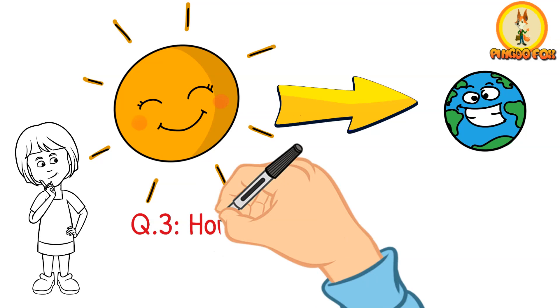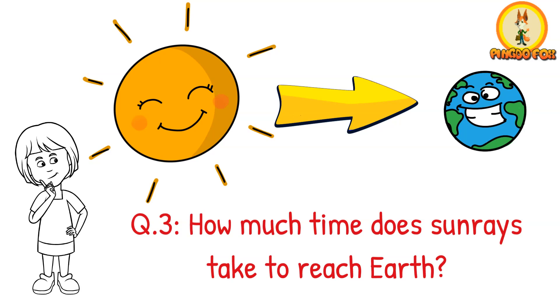How much time does sunlight take to reach Earth? The answer is 8 minutes and 20 seconds.